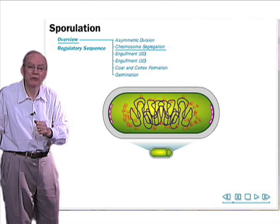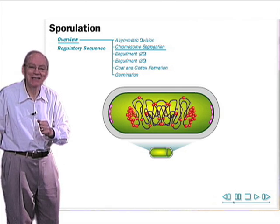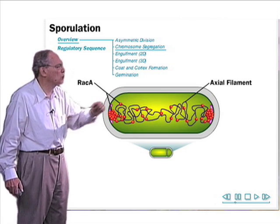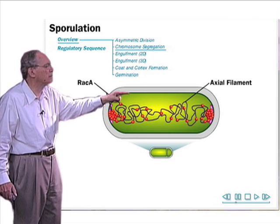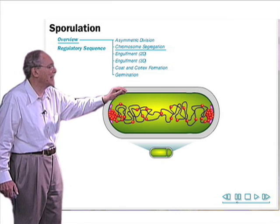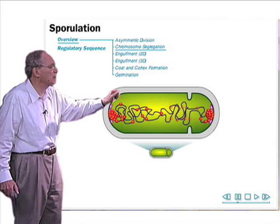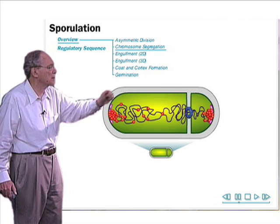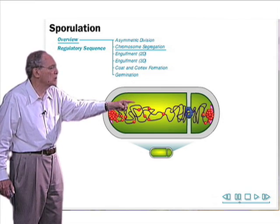Next, chromosomes need to be segregated into the two cells. While the Z rings are forming, the two chromosomes are remodeled into an axial filament by the RACA protein, which causes them to collapse into elongated filament and anchors the origins at the poles where the DIF4A protein is present. Then asymmetric division takes place,